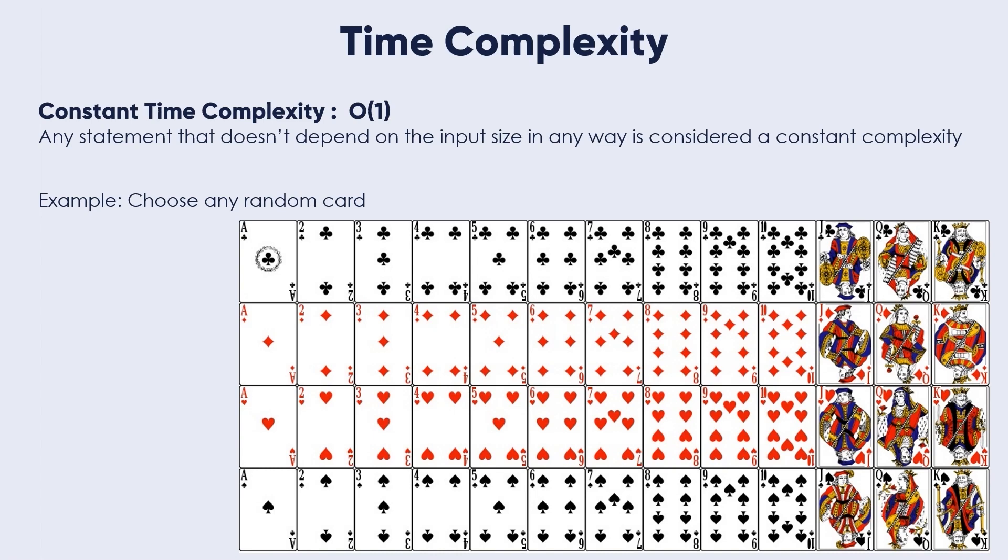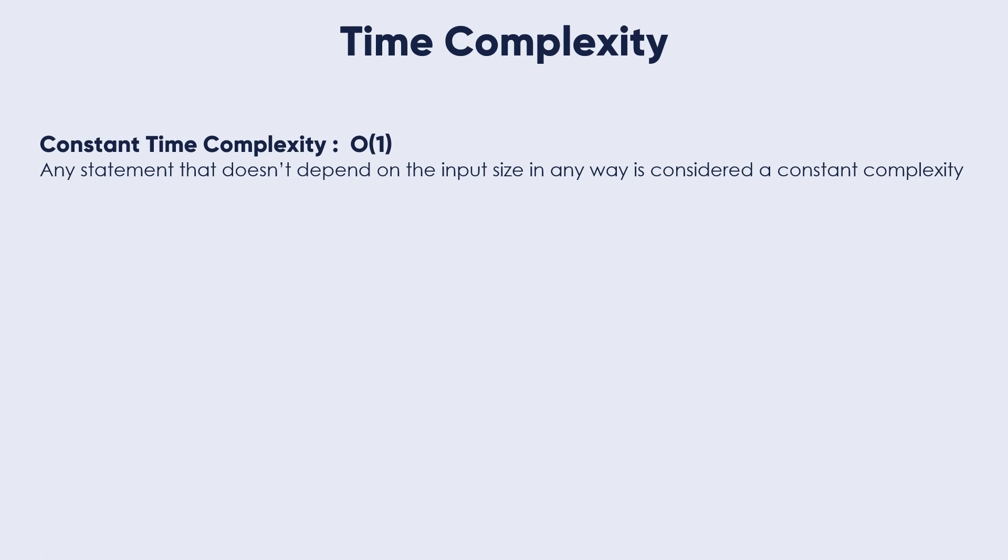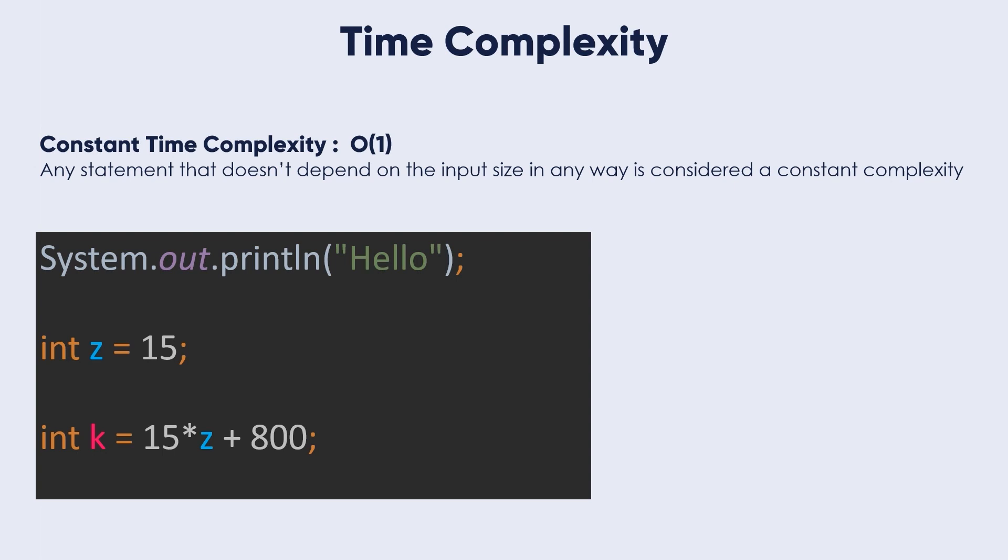In terms of coding, let's see the time complexity O of 1 in coding. We will use many coding languages through the course. This is a system.out printing hello. We are not doing anything, just making a constant thing. It's printing a message. If we create and initialize a variable.